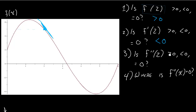Now, is f double prime of 2 greater than 0, less than 0, or equal to 0? Well, what do I look for there? For f, I just looked for what the value was of the graph. For f prime, I looked for the slope. And for f double prime, what I look for is the concavity. So this part of the graph is concave down — if you poured water on it, it would dump off. If you poured water on the concave up part, it would pool up. So this part is concave down, meaning f double prime is less than 0.